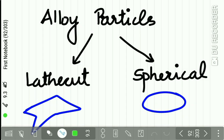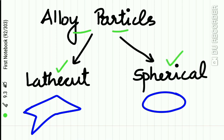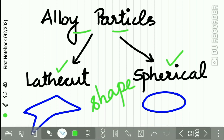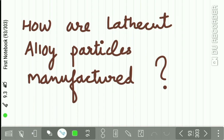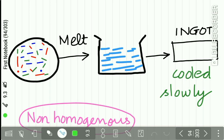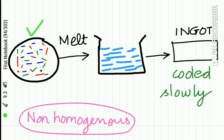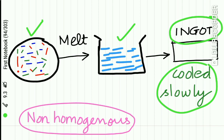Let's begin with how the manufacturing of the alloy particles takes place. The alloy particles are of two types depending upon the shape: the lathe cut and the spherical. For lathe cut particles, firstly all the ingredient metals are molten together. This molten metal is poured into a mold to form an ingot, and this mold is cooled slowly to form the ingot. This ingot of the cast structure contains non-homogeneous grains.